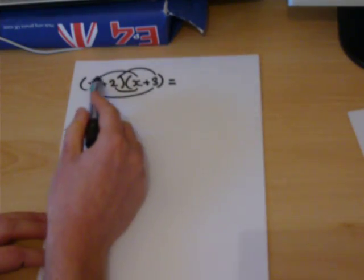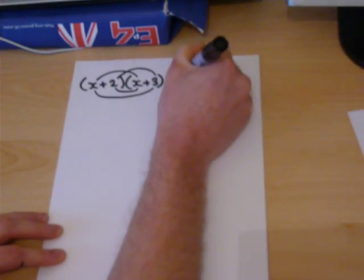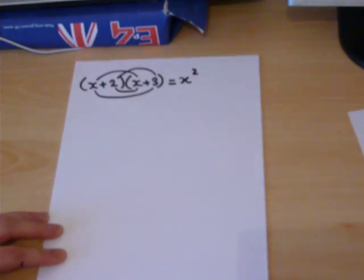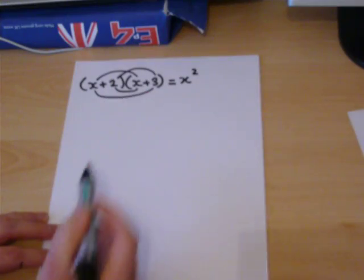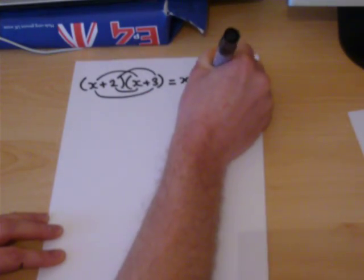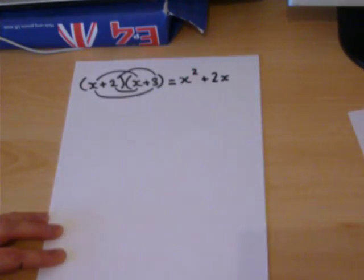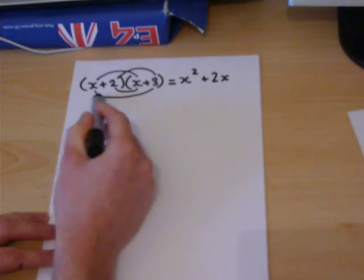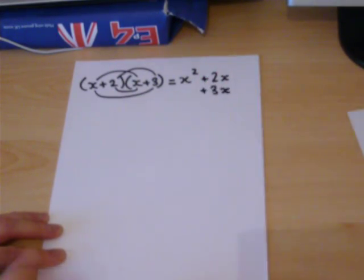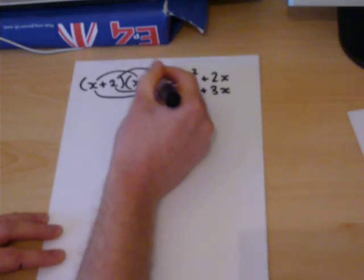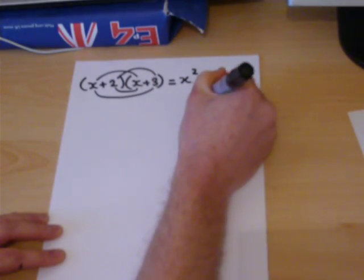Now, x times x is x squared. 2 times x is 2x. x times 3 is 3x. And 2 times 3 is 6.